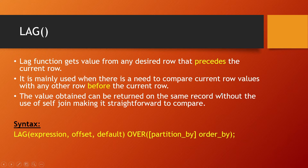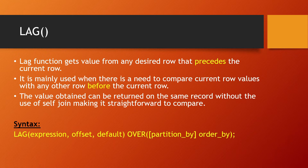The value obtained can be returned on the same record without the use of a self-join, making it straightforward to compare — that is the advantage of window functions. The syntax is: LAG(expression, offset, default) OVER (PARTITION BY ... ORDER BY ...). The expression is the column to apply lag on, the offset is the number of rows to look back (e.g., 1, 2, 3, or 4), and partition and order clauses are defined in the OVER clause.